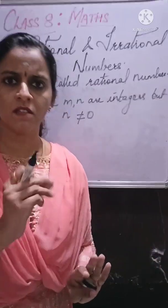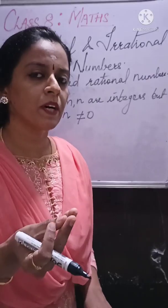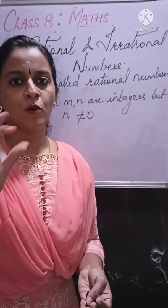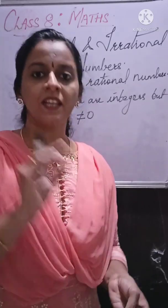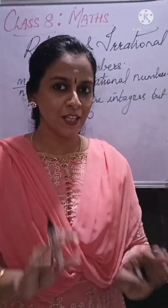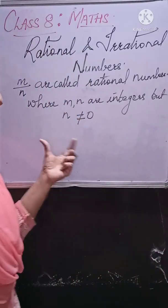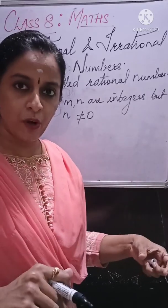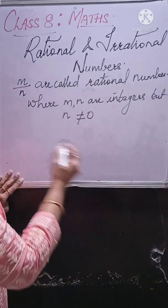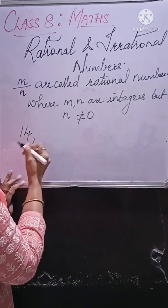If somebody asks you what are rational numbers, you have to say this. To summarize: Natural numbers are counting numbers. Whole numbers are 0 along with natural numbers. Integers are positive numbers and negative numbers along with 0. I hope all of you have understood these four types of numbers. Let us discuss more examples.